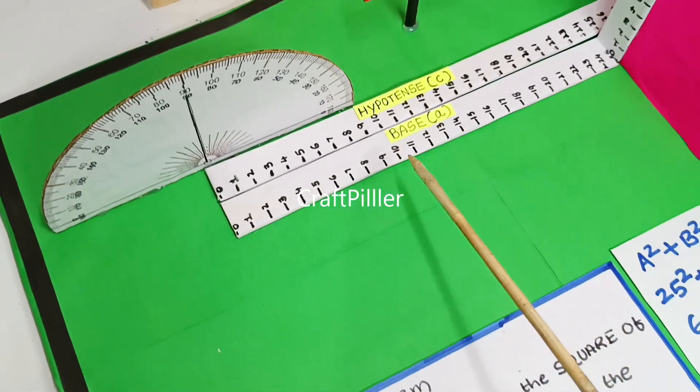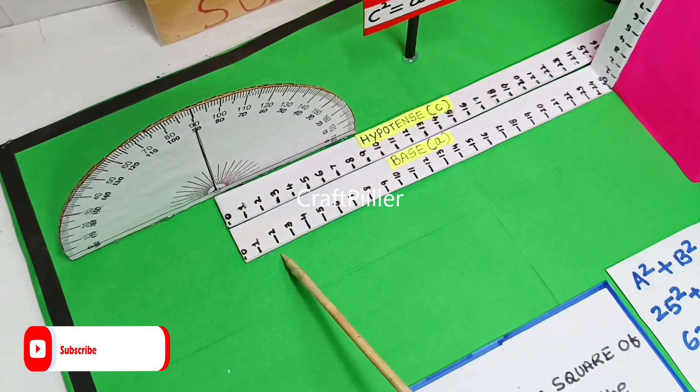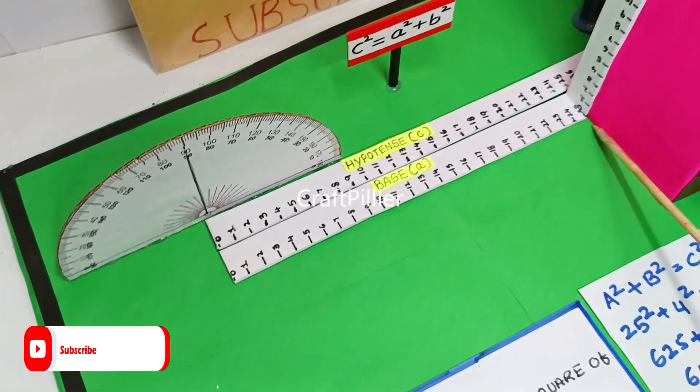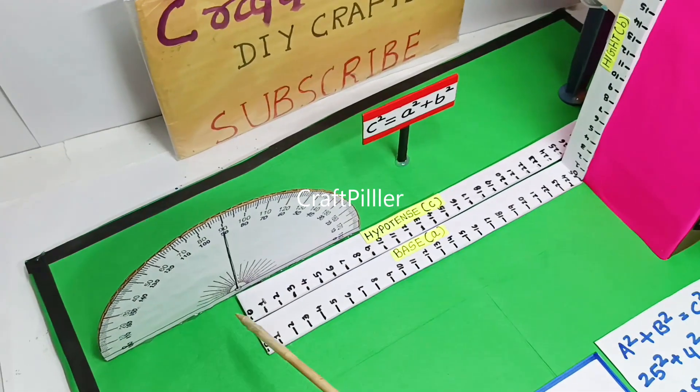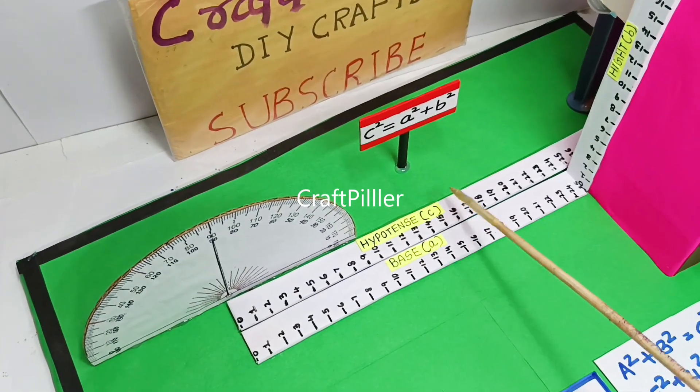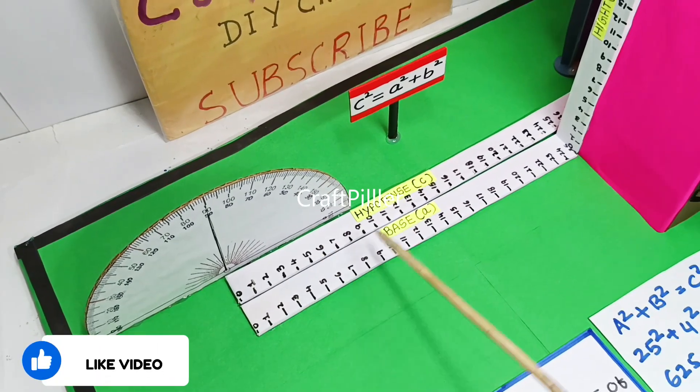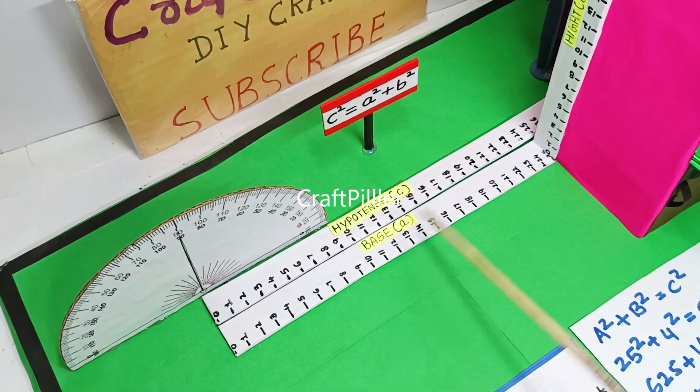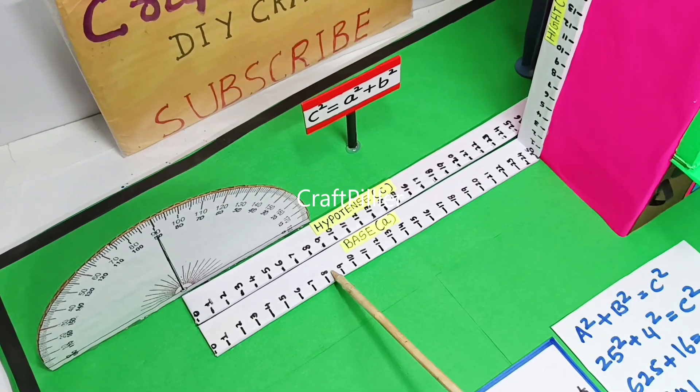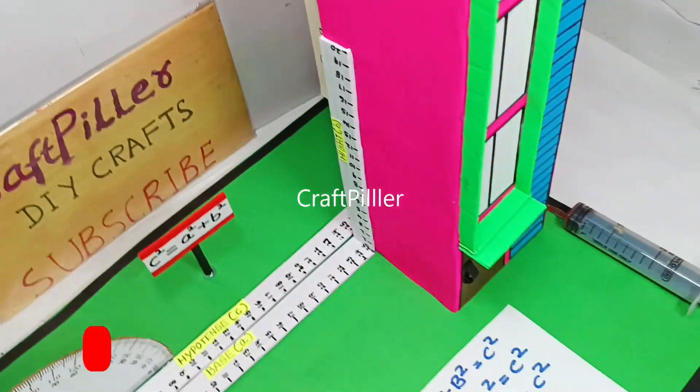In this representation, this is the base which we have kept at 25 centimeters, this is the height which is B, and we have the hypotenuse which is C. The base is fixed at 25 centimeters but the height will be varying by making use of syringes.